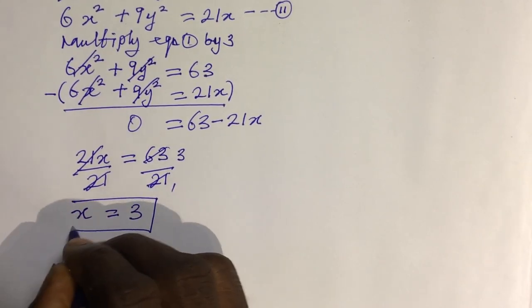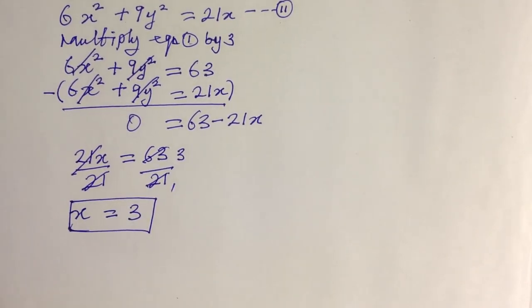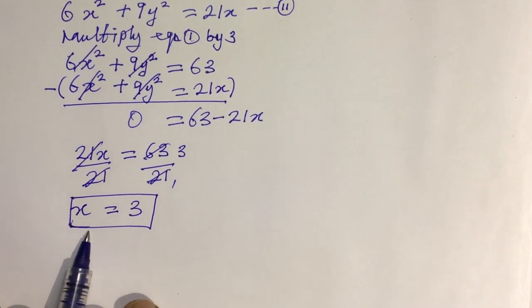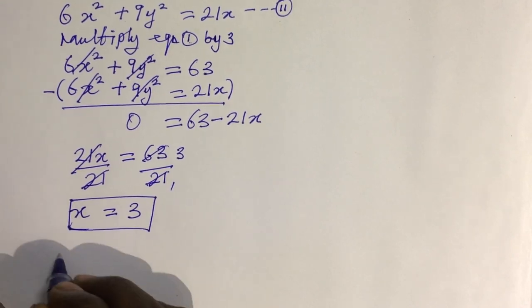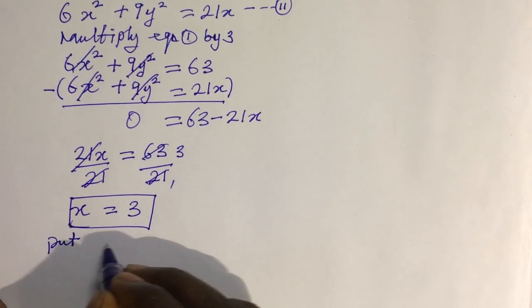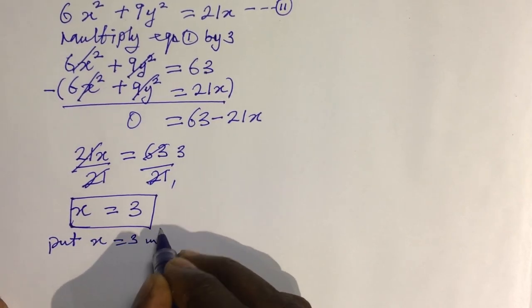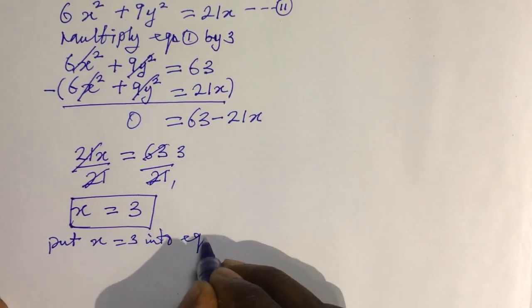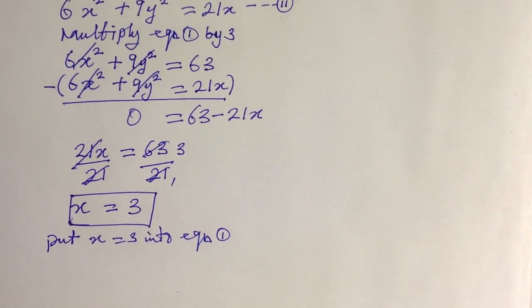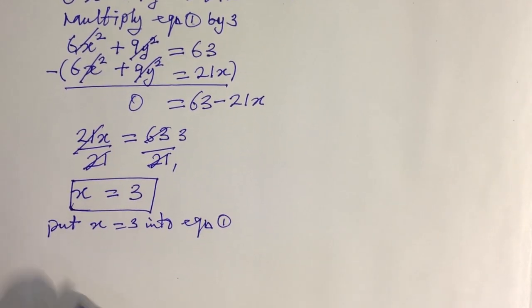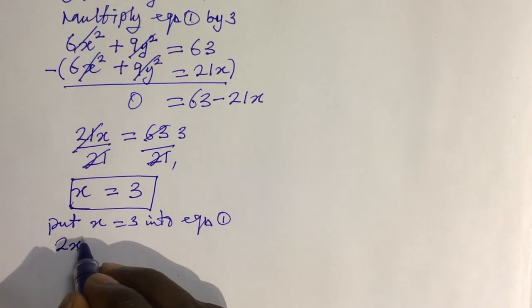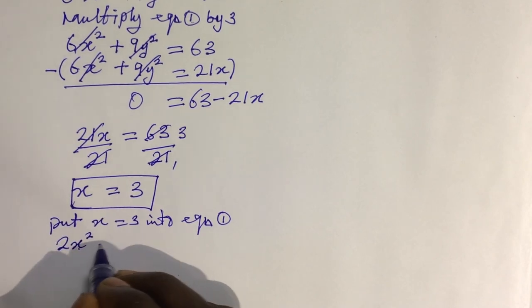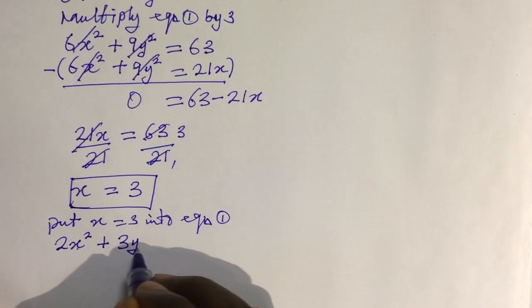Now we substitute x = 3 into Equation 1, which is the simpler equation. So we put x = 3 into: 2x² + 3y² = 21.